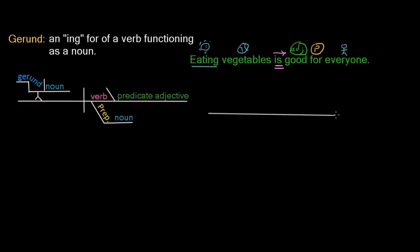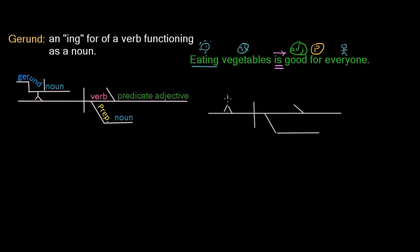Let's go ahead and diagram it now. We have our baseline and our bisecting line, which separates our subject — which in this case is going to be our gerund — from our verb. Since we have a predicate adjective, which is a subject complement, we're going to use the little slanted line after the verb to show that it refers back to the subject, modifying it just like any other adjective. We'll put our prepositional phrase underneath the verb is, because it's functioning adverbially. And here we build our little platform, and on top of the platform, for a gerund, we build a little staircase.